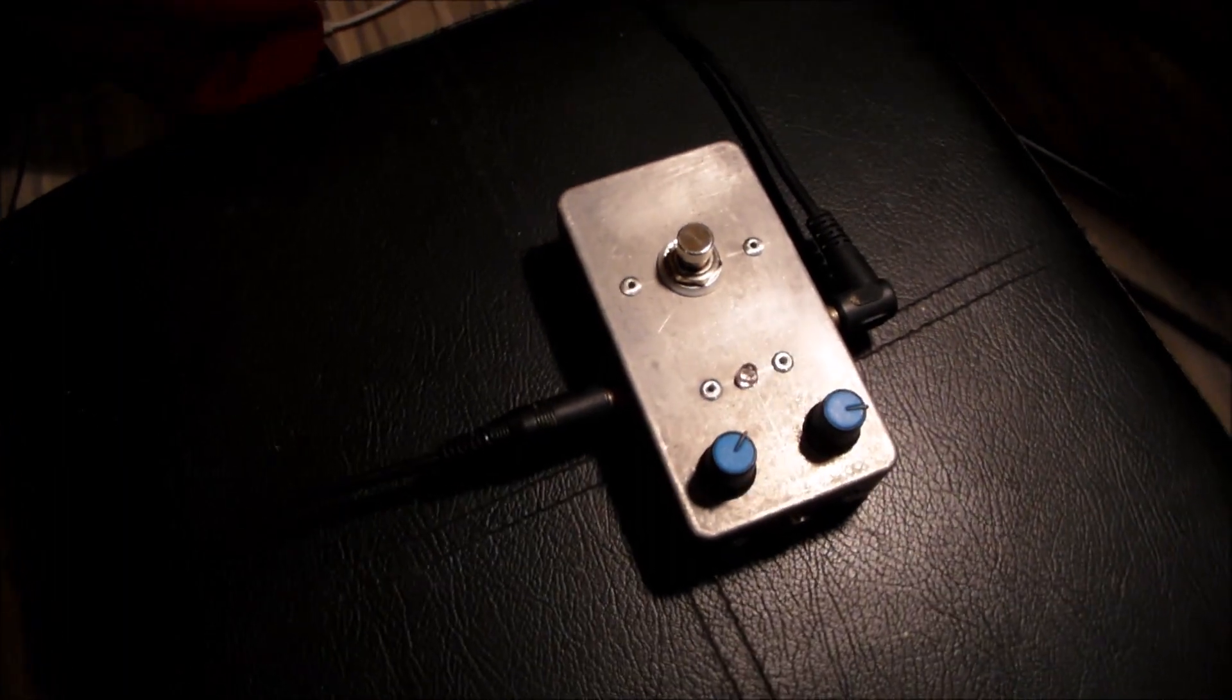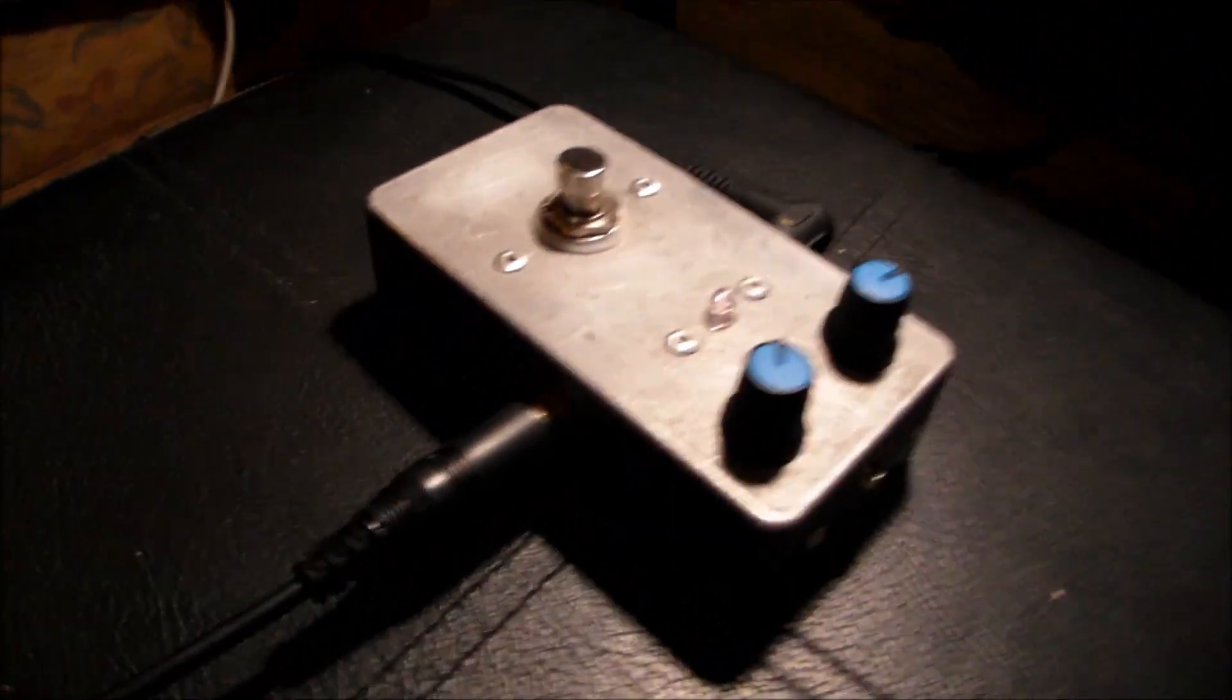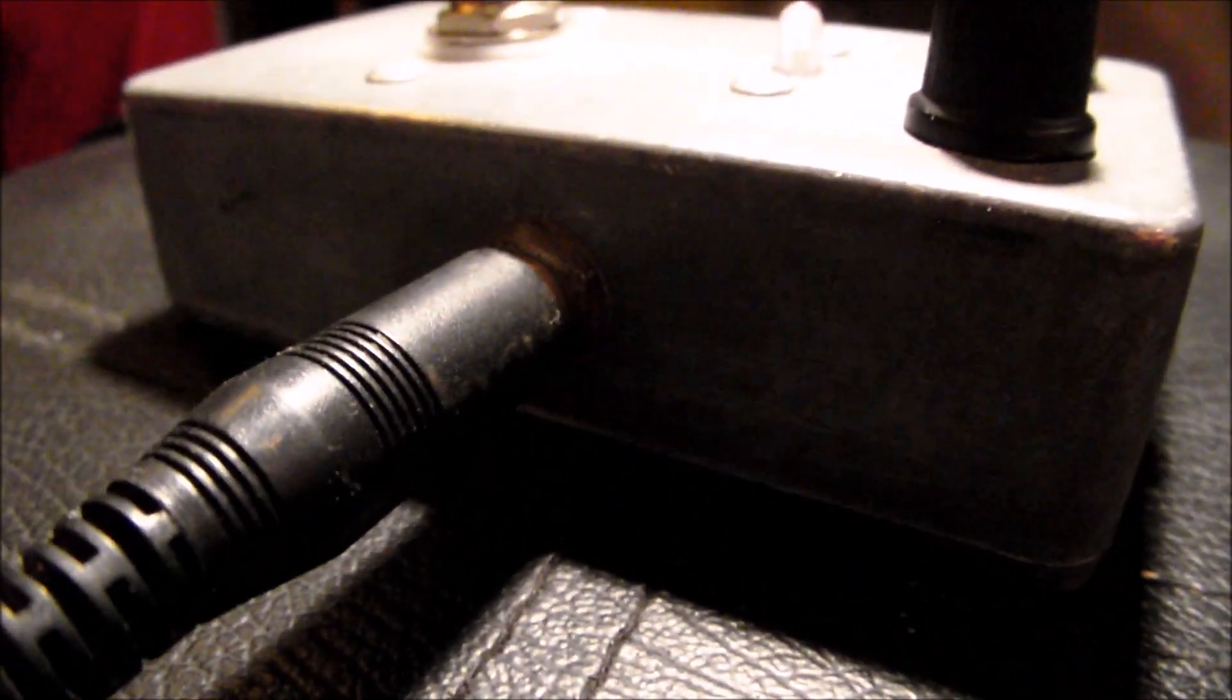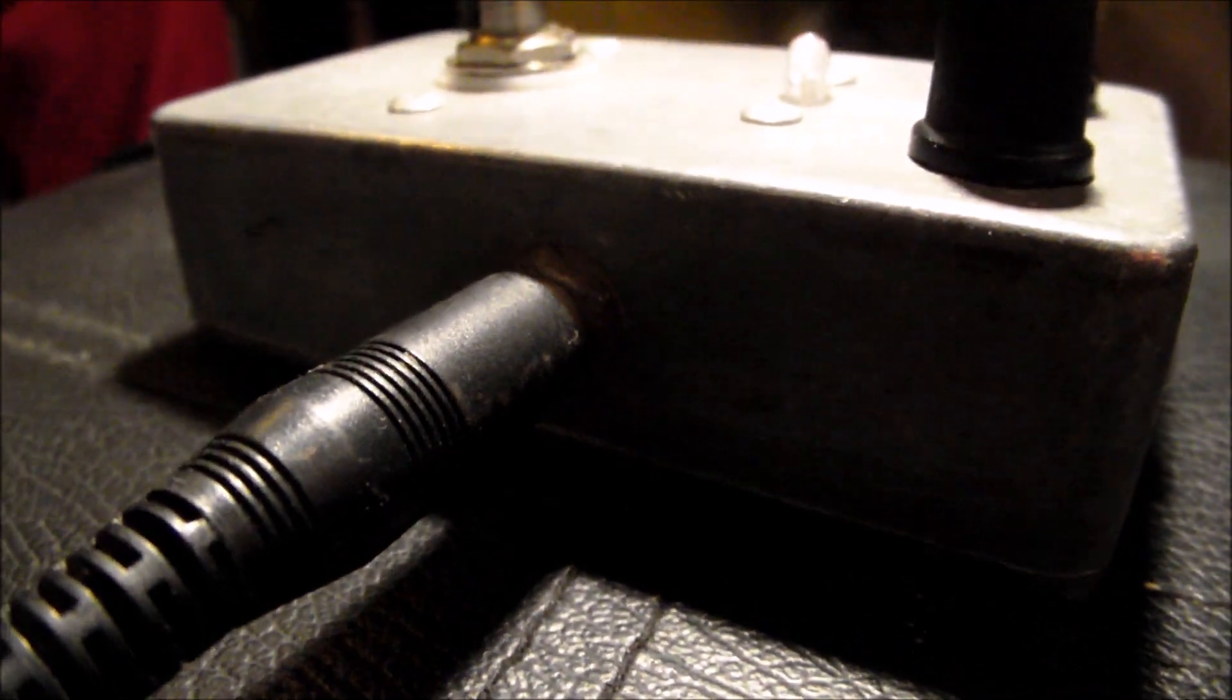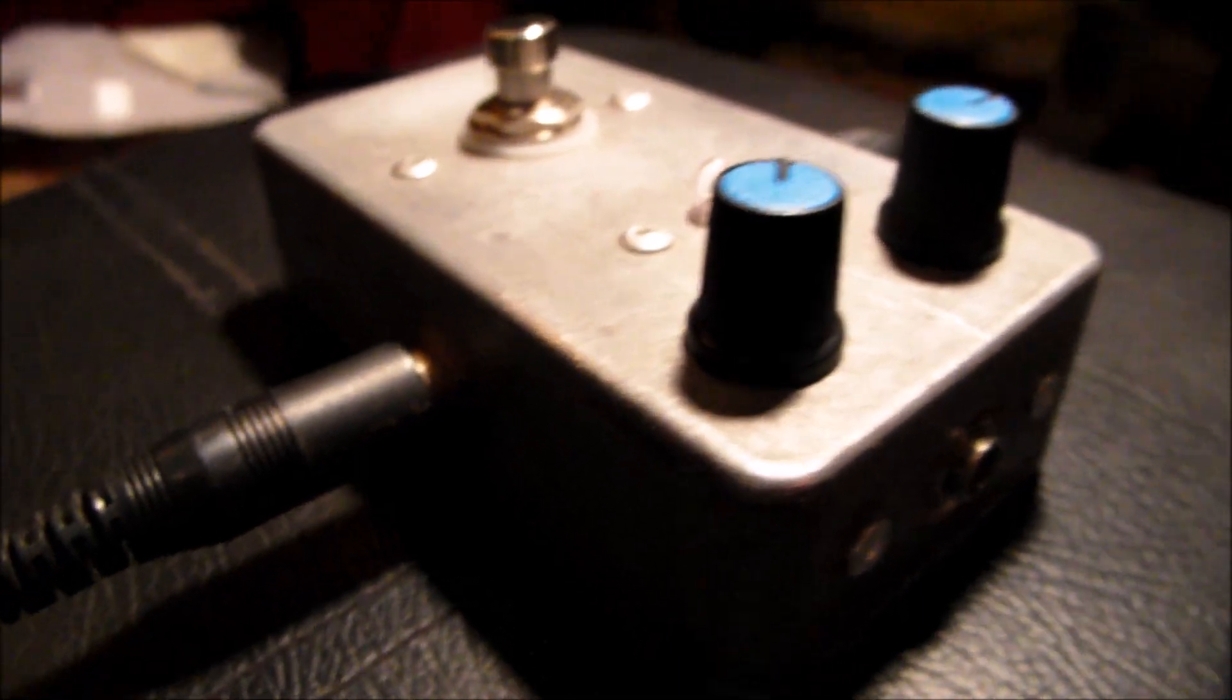Hello, here we have a fuzz box with a new circuit. It consists of a silicon transistor in the first preamp followed by two germanium transistors. Okay, so clean.